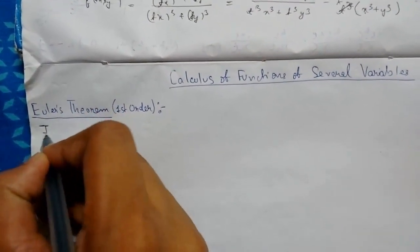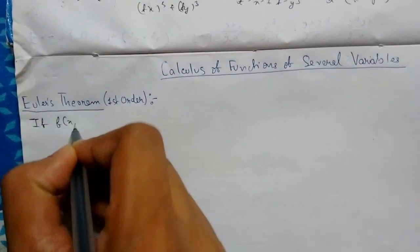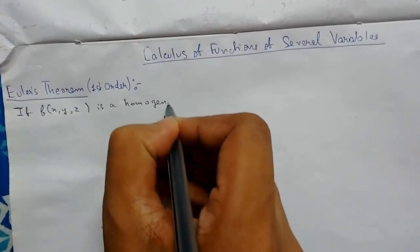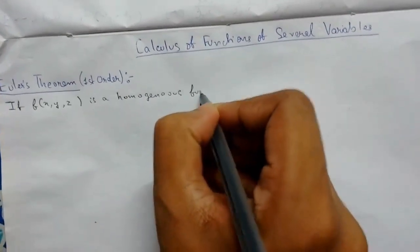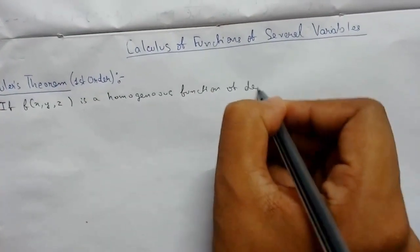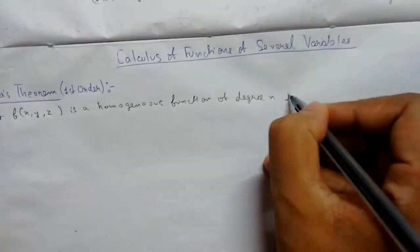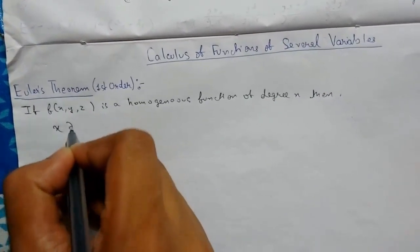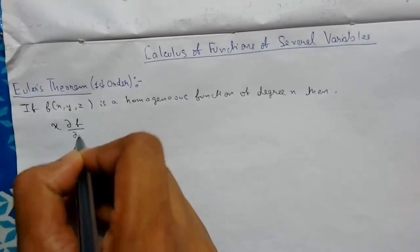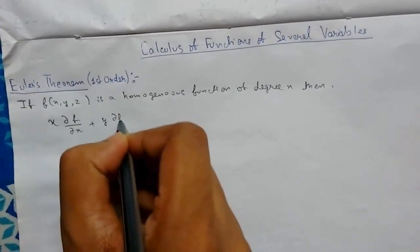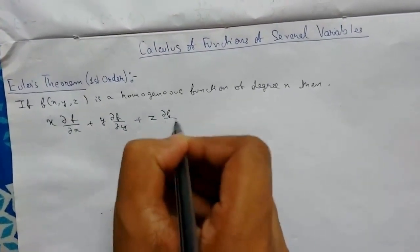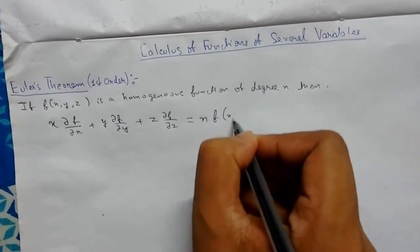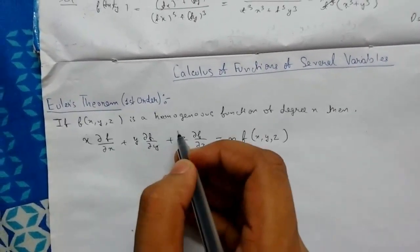So let's get started. If f is a homogeneous function of degree n, then this is the statement: x del f del x plus y del f del y plus z del f del z will be equal to n times f of x, y, and z. So this is the statement.